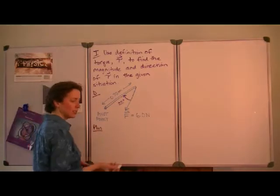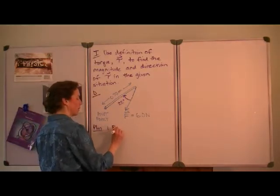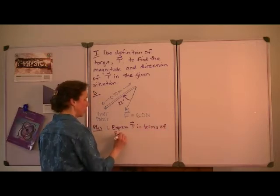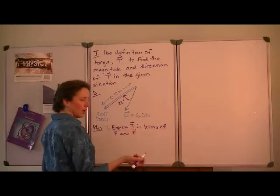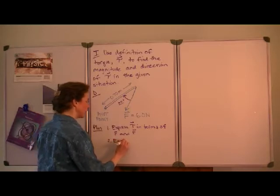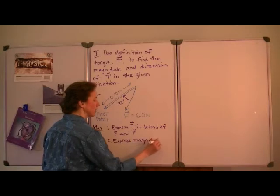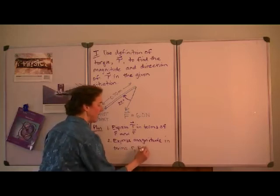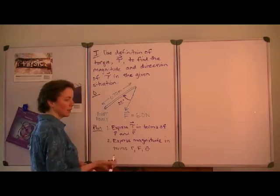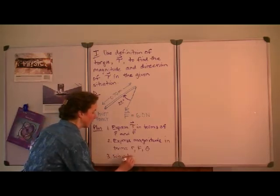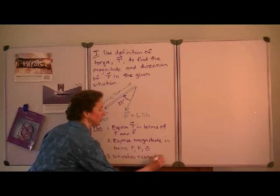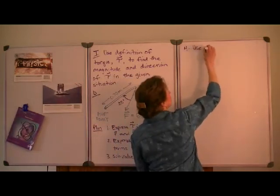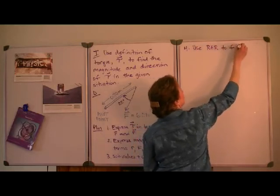Our plan is to express the torque in terms of the moment arm R and the applied force F. Then we'll express the magnitude separately from the direction — in terms of the magnitude of R, the magnitude of F, and the angle between them. We'll substitute values and compute the magnitude of the torque. For the direction, we'll use the right-hand rule, which I'll abbreviate as RHR, and review when we get there.